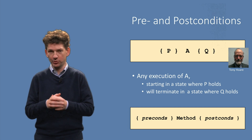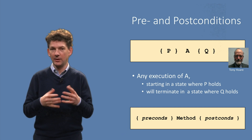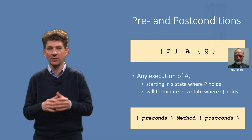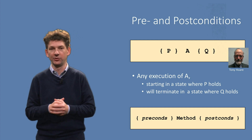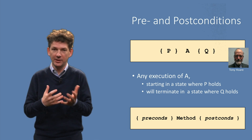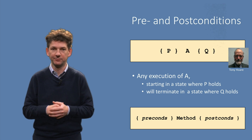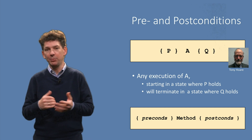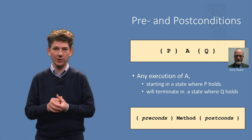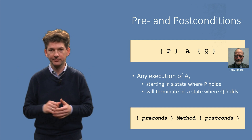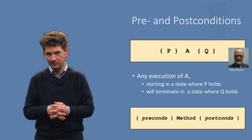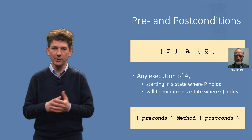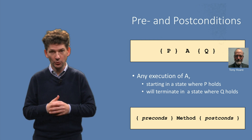Q is referred to as the post-condition of A. This post-condition can usually only be achieved under certain circumstances, which are called the pre-conditions. In the triple notation these are expressed as P. If there are no assumptions needed to execute A, P can be the simplest possible proposition, which is just true. Read from left to right, if you know that P holds and you execute A, you'll end up in a state in which Q holds.